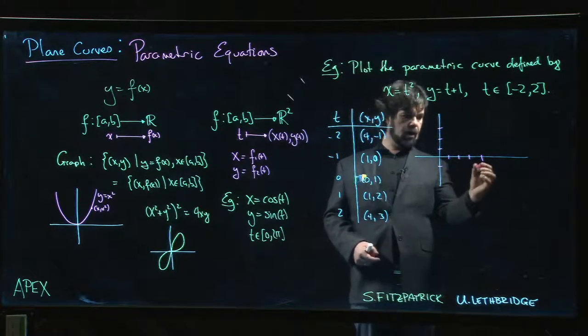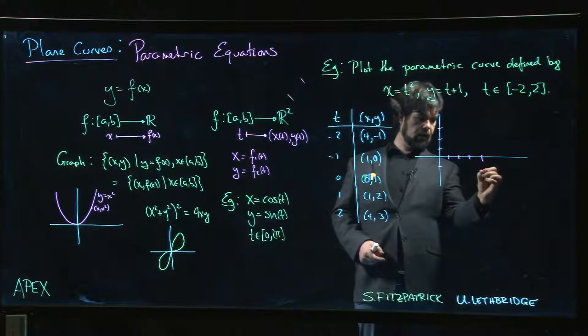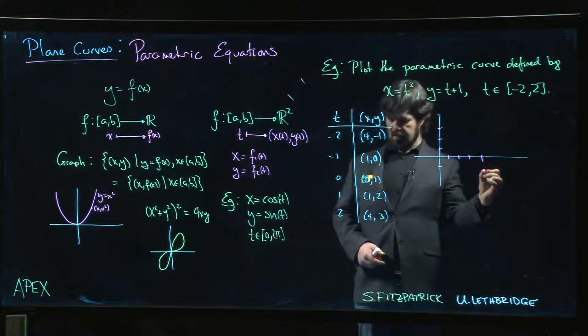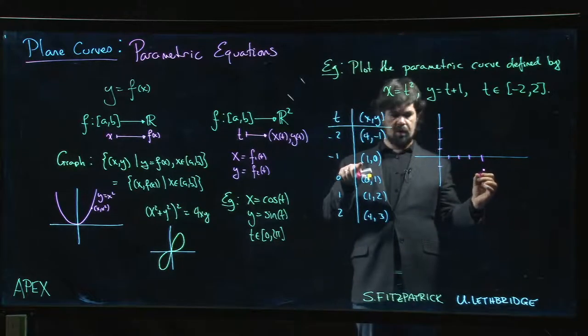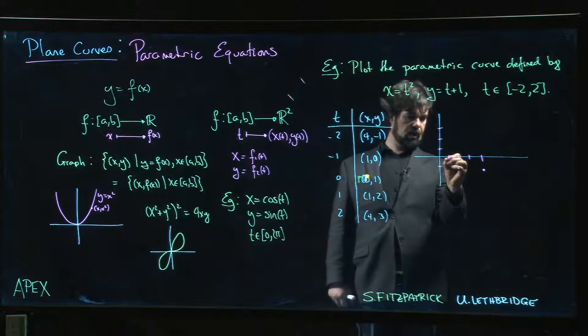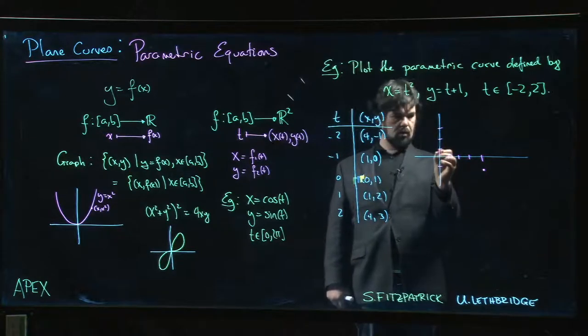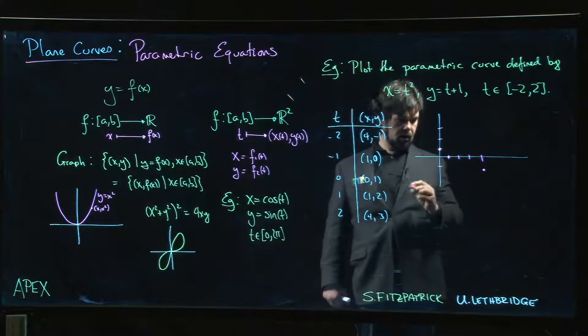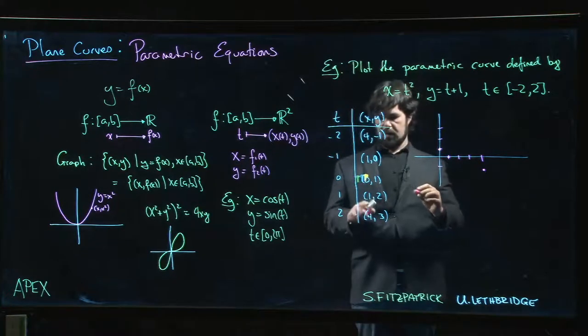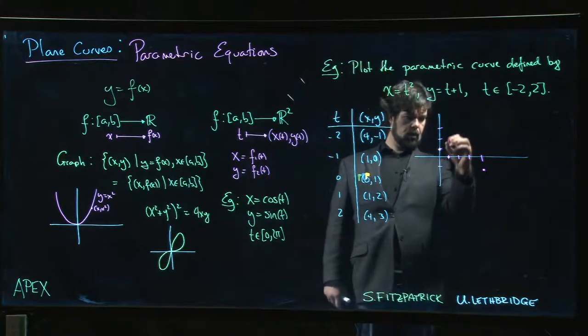We have 4 and -1, so we start here. We have that point. Then we have 1 and 0, so we have that point. We have 0, 1 - that point. We have 1, 2 - one, two is here.